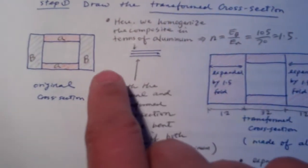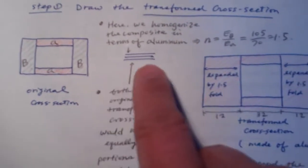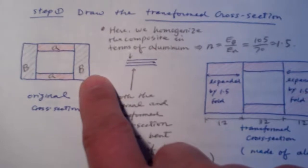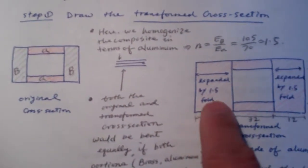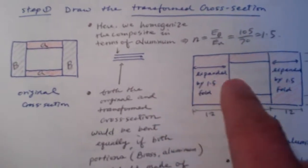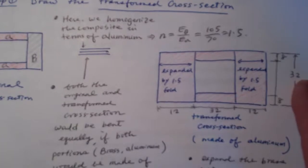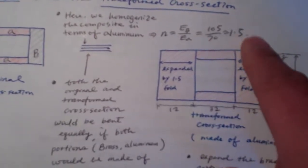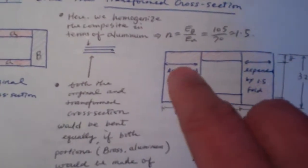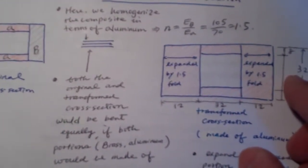So now we pick this material brass to be transformed. So we widen the dimension of the brass by 1.5 fold in the direction of the neutral axis, which is here. This is the key. You shouldn't widen the dimension in the vertical direction. You must widen the dimension in the neutral axis direction.